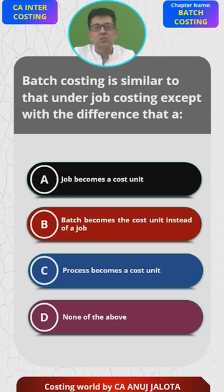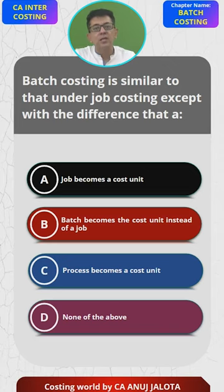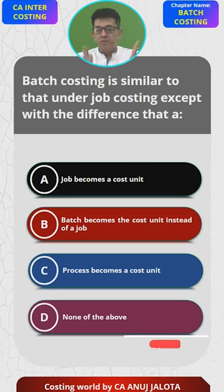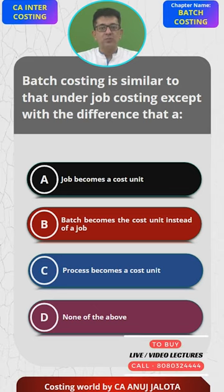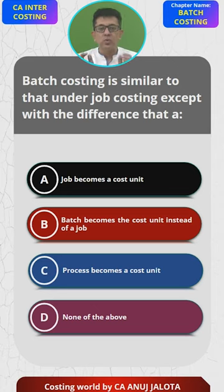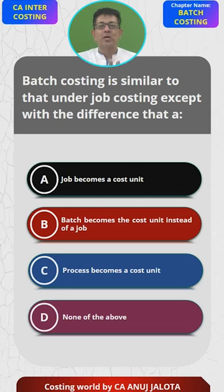Batch costing is when a customer comes and tells you to make 1000 similar units of a particular thing. Those 1000 units will be called one batch. To find out the cost of each unit, first find out the cost of the entire batch of 1000 units, then divide by 1000 — that gives you the cost per unit. So instead of one job becoming one cost unit, one batch becomes one cost unit.